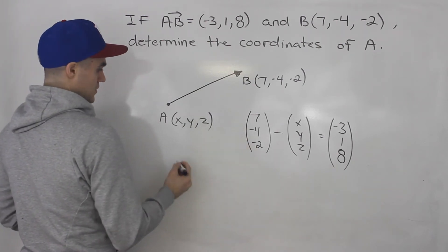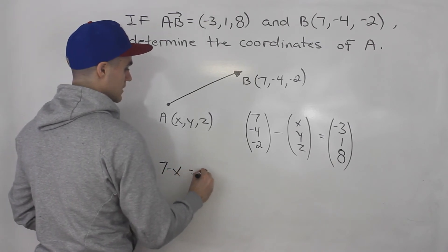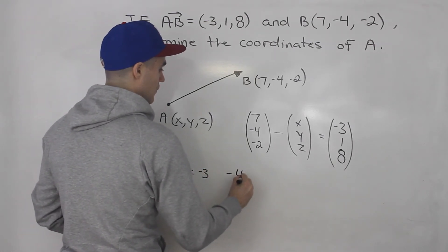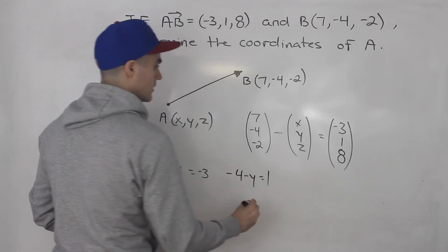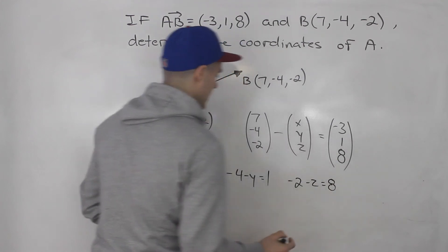And then notice we could just create equations. So we got 7 minus x, that has to equal -3, -4 minus y, that has to equal 1, then -2 minus z, that has to equal 8.